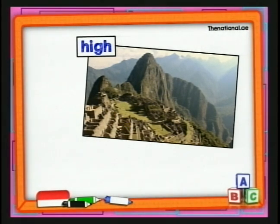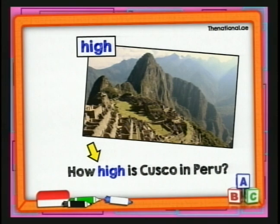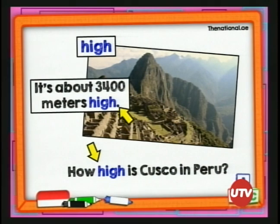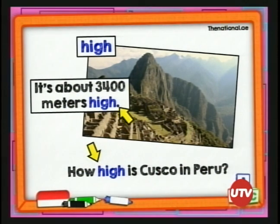Seguimos con 'high'. Vamos a hacer la siguiente pregunta: ¿qué tan alto queda el Cusco, o a qué altura queda el Cusco? 'How high is Cusco in Peru?' La respuesta: 'It's about 3,400 meters high.' Observen que en la respuesta también tenemos el adjetivo 'high' — dice que está a tres mil cuatrocientos metros de altura.